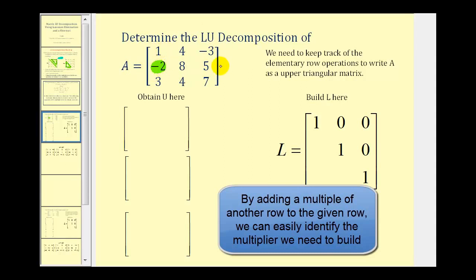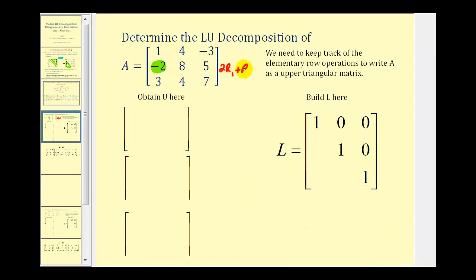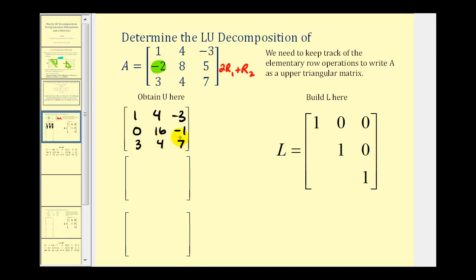We can replace row two with two times row one plus row two to obtain a zero in that position. The first row stays the same. The second row: two times one plus negative two is zero; two times four plus eight is sixteen; and two times negative three plus five is negative one. The third row stays the same. To perform this row operation, our multiplier was positive two, which helped us obtain a zero in row two, column one of this matrix.